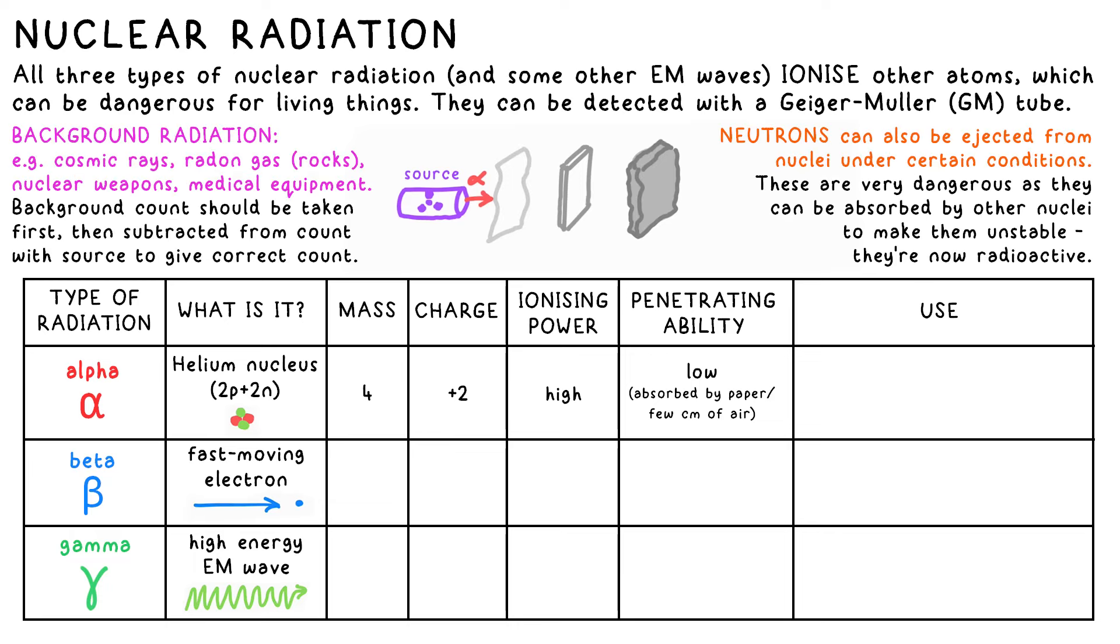I say near zero because there are background sources of radiation from the world around us. Radon gas comes out of concrete and rocks, that's slightly radioactive. Cosmic rays from space are also background radiation. Man-made radiation like that from nuclear weapons contribute to it too. So if you want an accurate radiation count over a minute from an alpha source say, you should do a background count first, then take that number away from the count with the source. That will give you a corrected count.